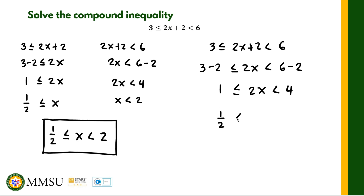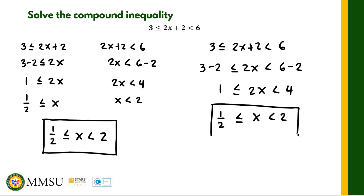Then we divide all sides by 2, and we are left with one half is less than or equal to x, which is less than 2. We get the same solution from both methods. Now, how do we write this in interval notation?